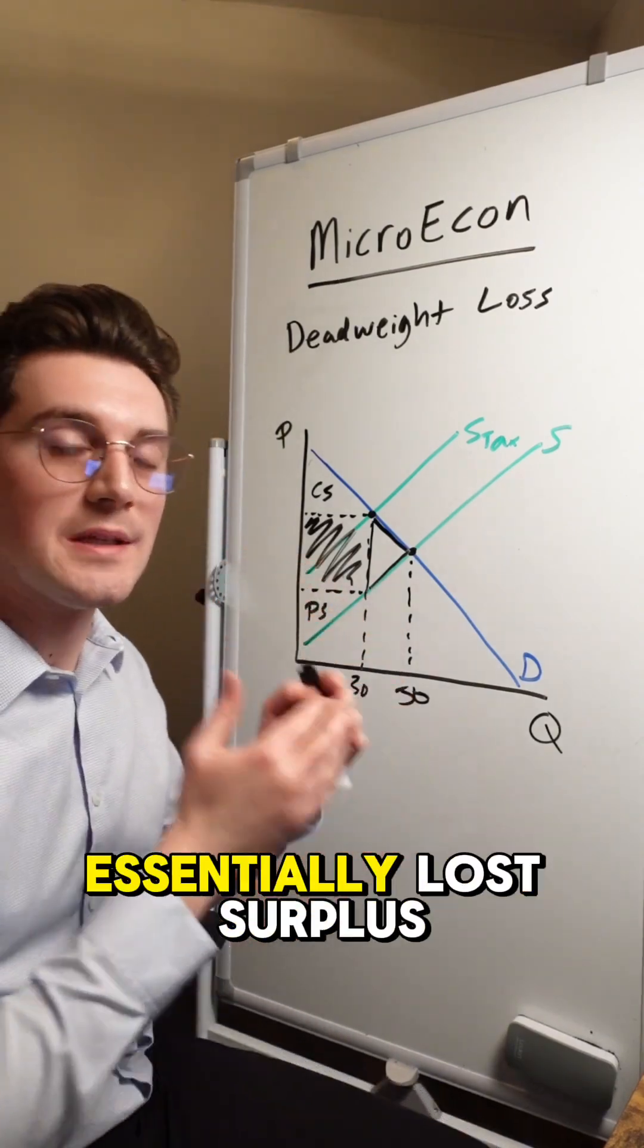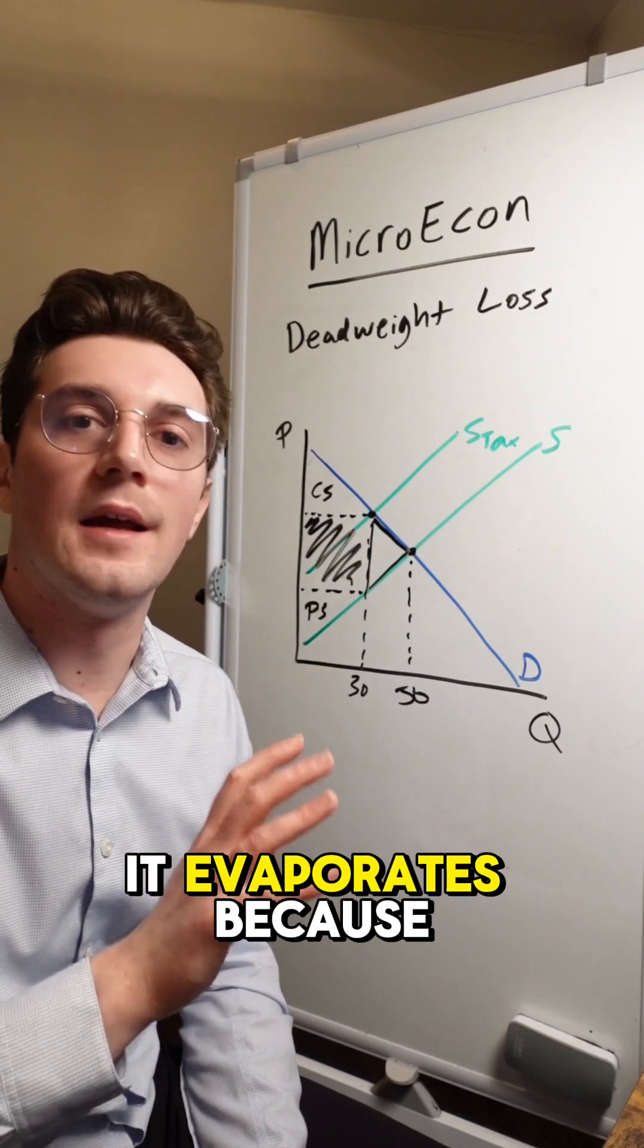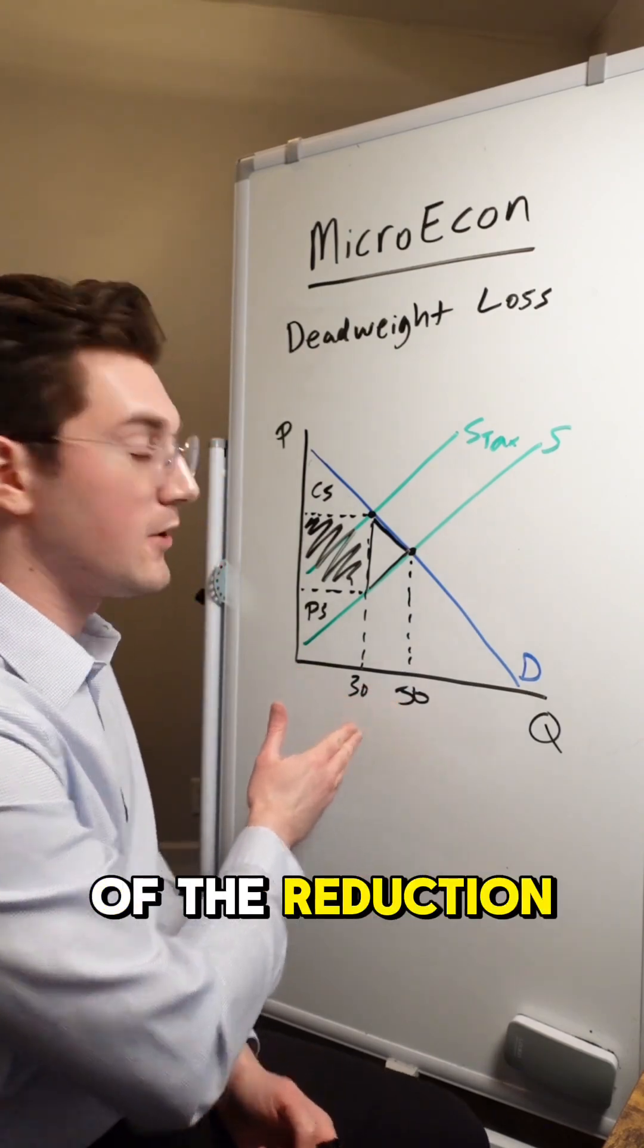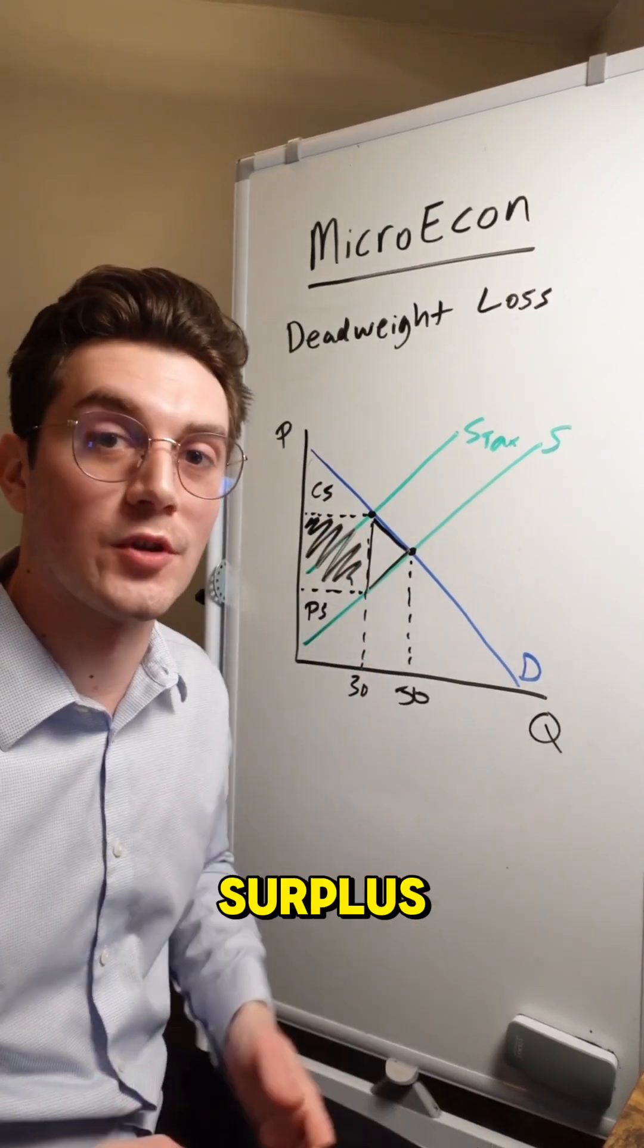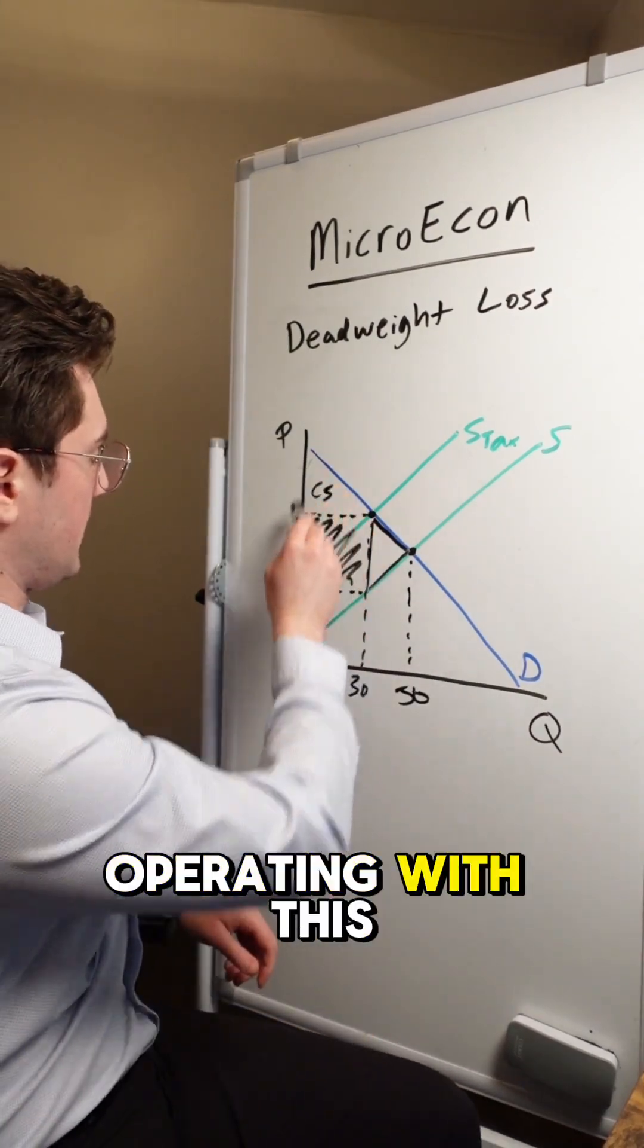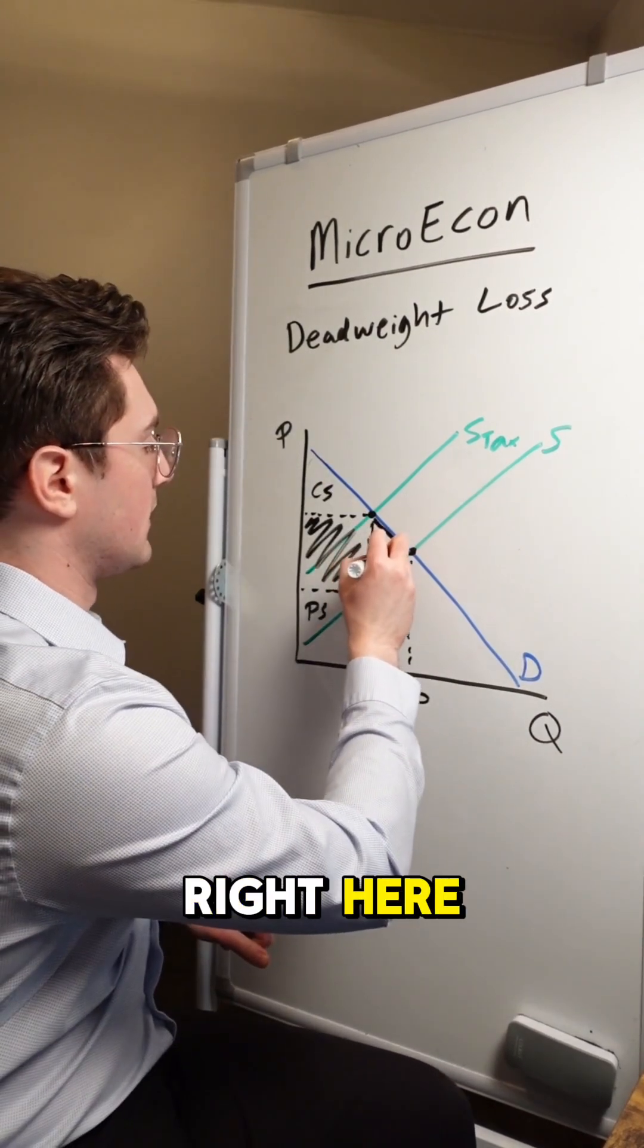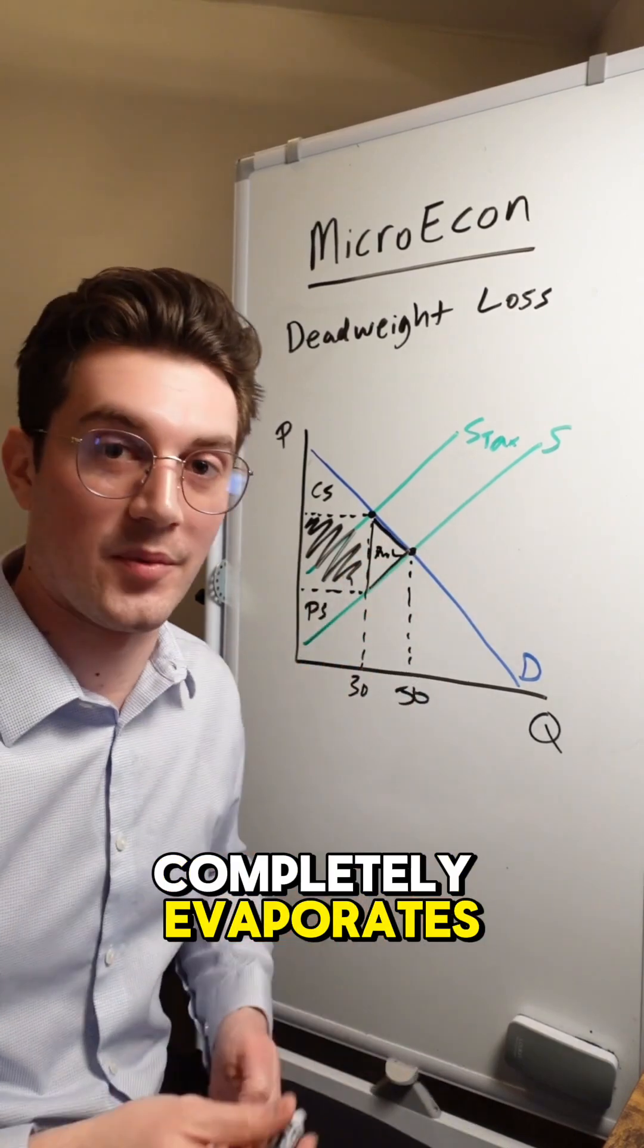Because this is essentially lost surplus. It evaporates because of the reduction in equilibrium quantity. We were operating with this entire triangle as total surplus. But now we're operating with this trapezoid. And this triangle right here of deadweight loss completely evaporates.